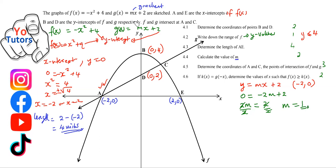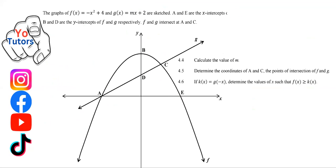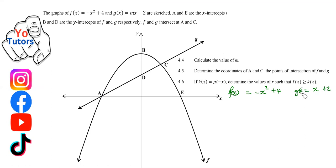Question 4.5 asks us to determine the coordinates of A and C, the points of intersection of f and g. We now have f(x) = -x² + 4 and g(x) = x + 2, since m = 1.